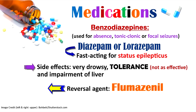Benzodiazepines — such as diazepam or lorazepam — are used to treat absent seizures, tonic-clonic seizures, or focal seizures, and are commonly used in status epilepticus because they are fast-acting. Side effects include drowsiness and tolerance with prolonged use. They can also impair the liver, so monitor liver studies. The reversal agent for benzodiazepines is flumazenil — always have it on hand when giving these medications in case of toxicity.